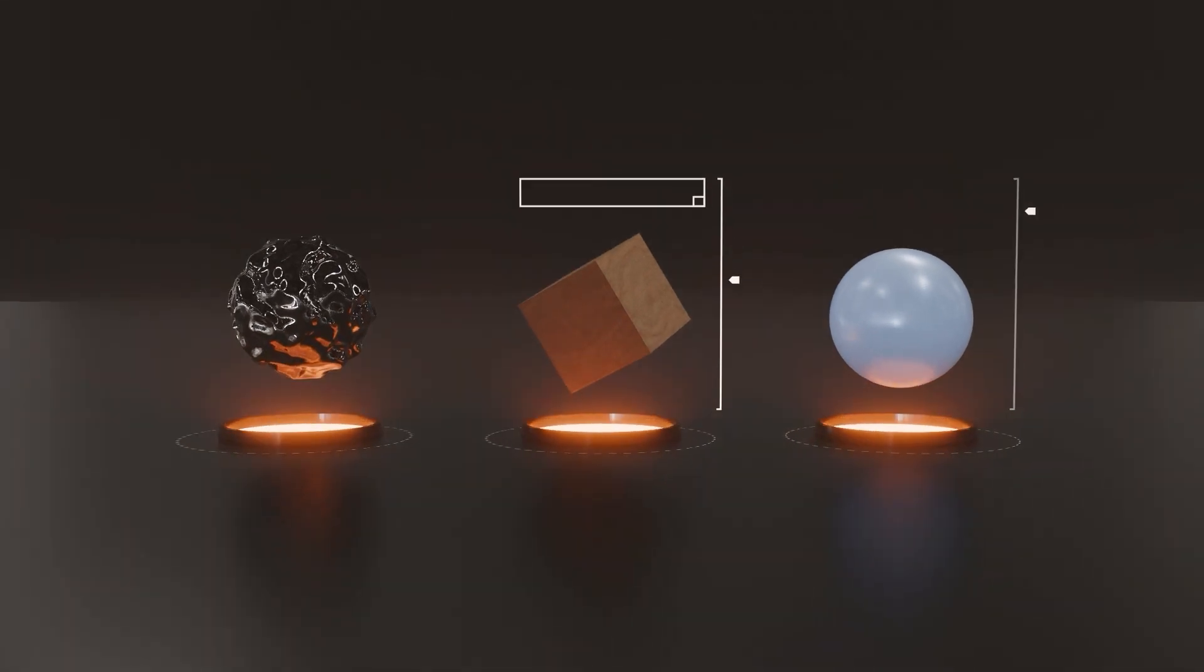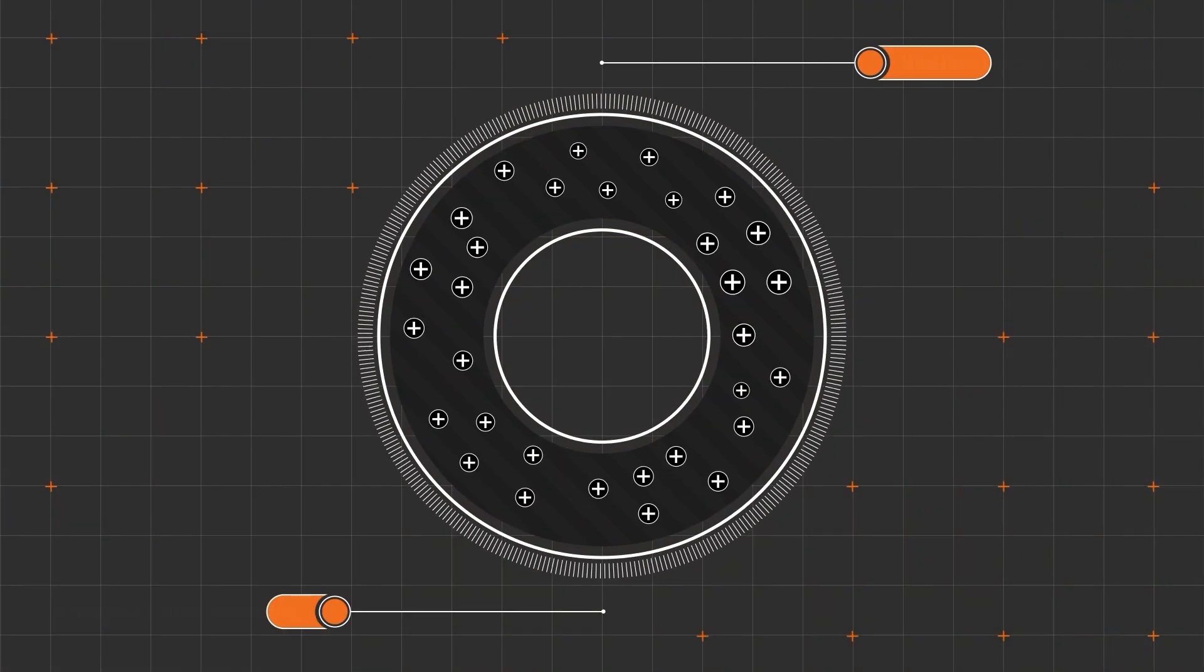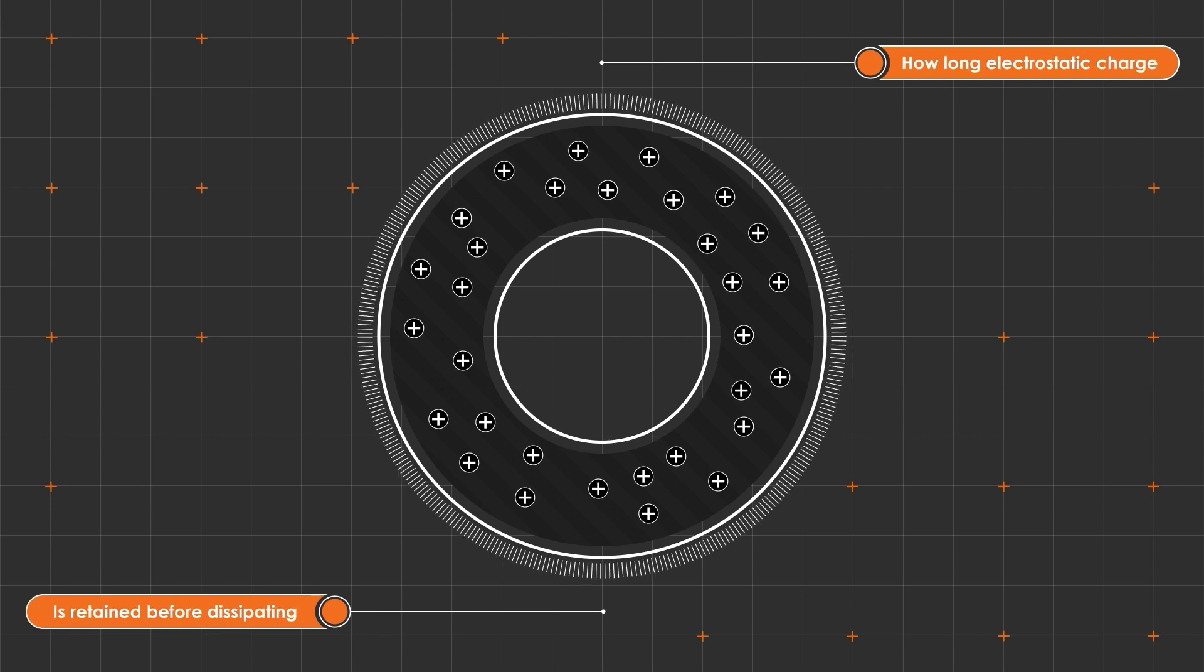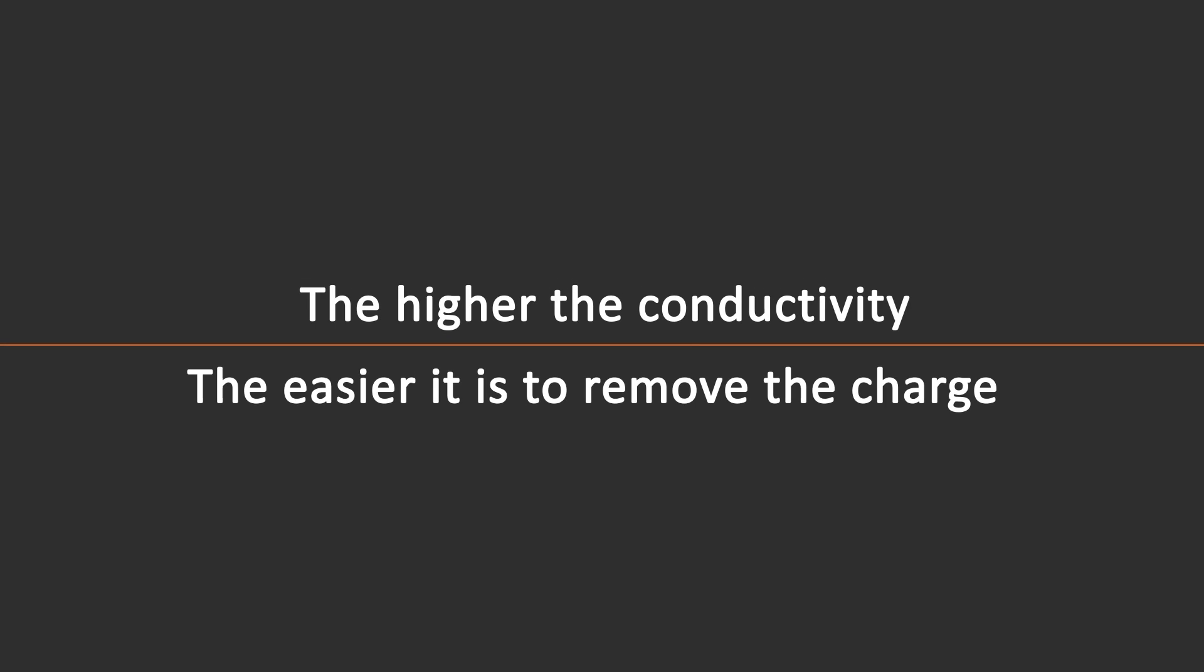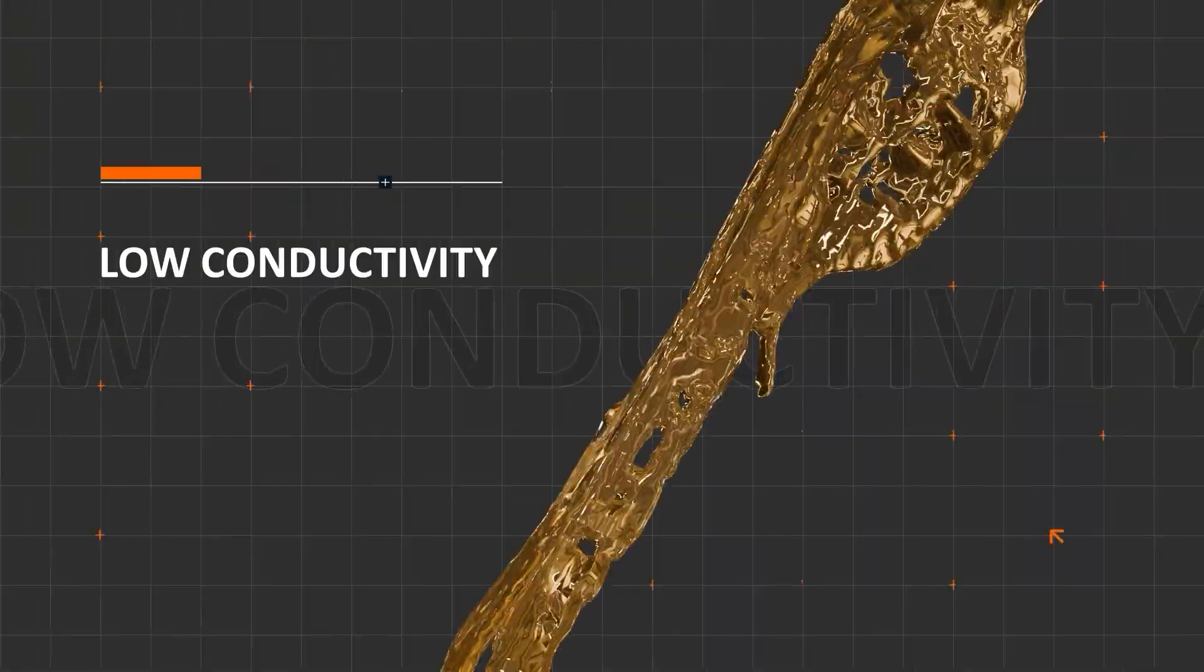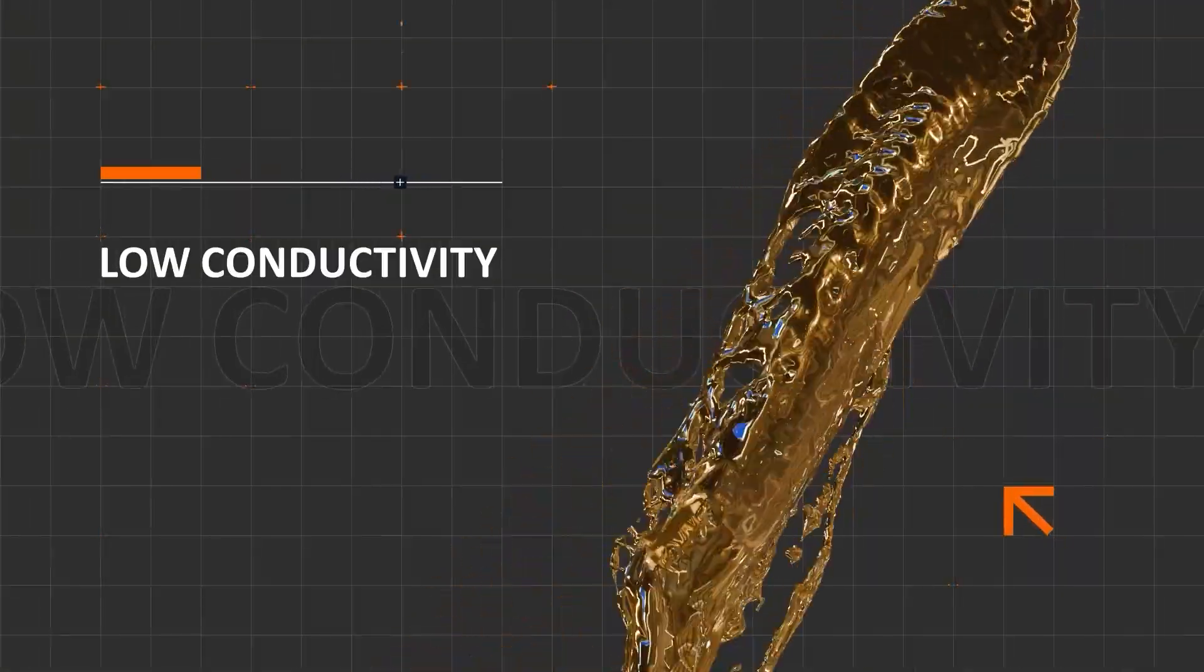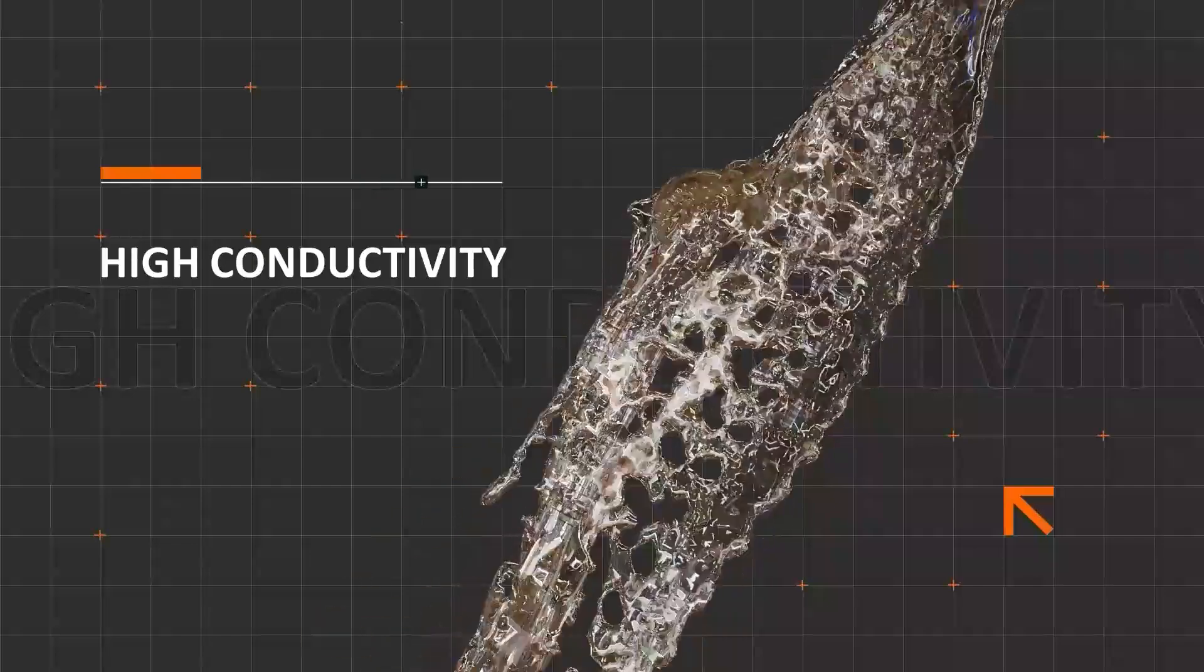Some materials are better conductors of electricity than others. Conductivity is important because it influences how long any accumulated electrostatic charge will be retained before it dissipates to leave the material electrically neutral. The higher the conductivity, the easier it is to remove the charge. Materials are generally classified into low, medium, and high conductivity. Examples of low conductivity materials include lubricating oils. Water is an example of a high conductivity material.